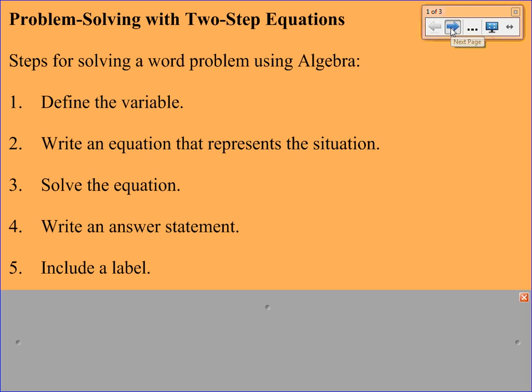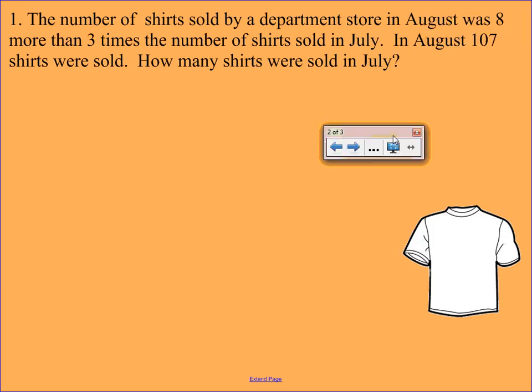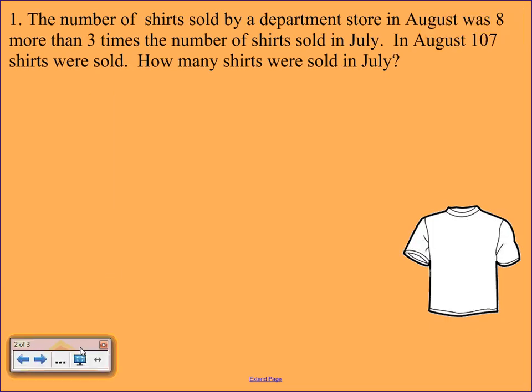Alright, so let's get started. Our first example reads like this: The number of shirts sold by a department store in August was 8 more than 3 times the number of shirts sold in July. In August, 107 shirts were sold. How many shirts were sold in July?